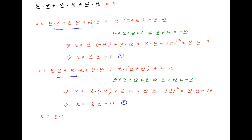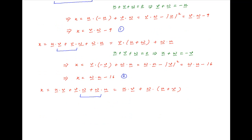Now, again, write the expression for x, which is equal to u dot v plus v dot w plus w dot u. And this time, combine the second and the third term. Therefore, x can be written as u dot v plus w dot in brackets u plus v. Now, we are given that u plus v plus w is equal to the null vector, therefore u plus v is equal to minus w.